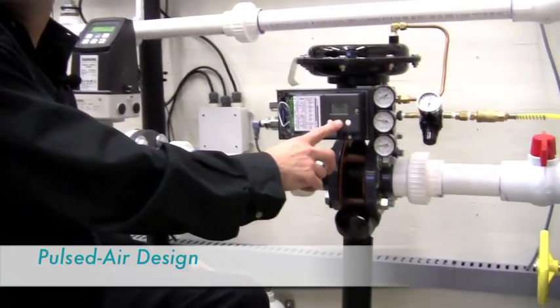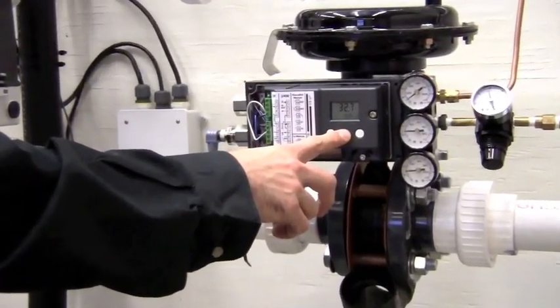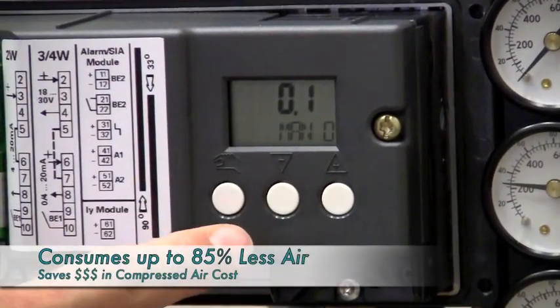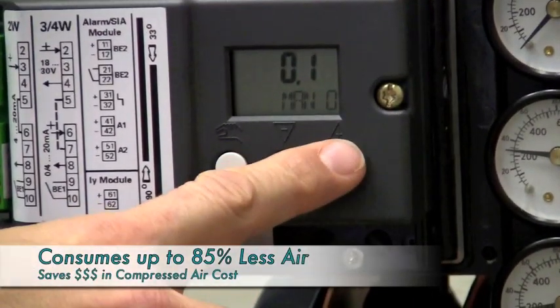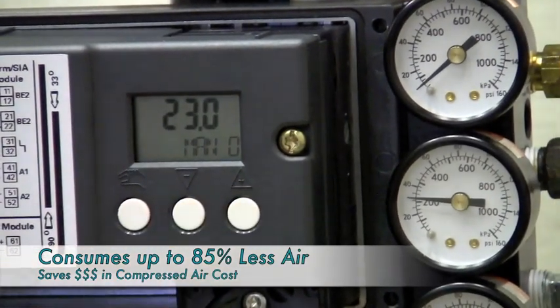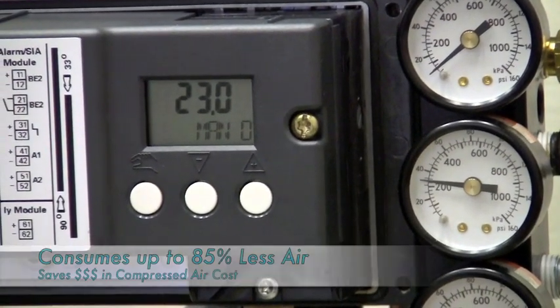The PS2 uses a unique pulsed air design to deliver air to the actuator. Unlike most other conventional positioners, which have a flow of air all the time, this means that on average the PS2 consumes 85% less air to do the same job as a conventional valve positioner.